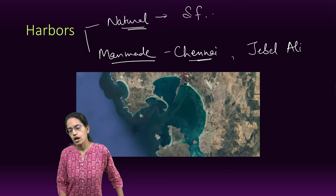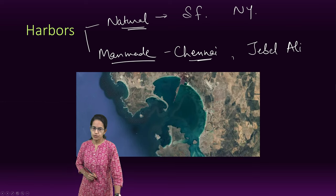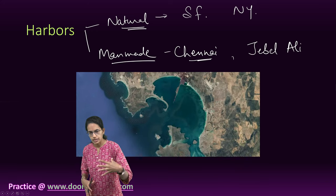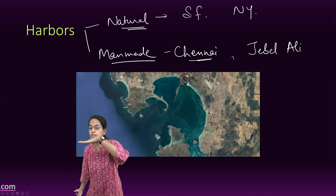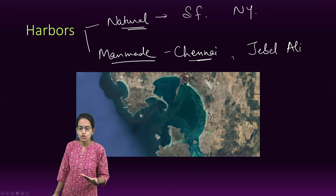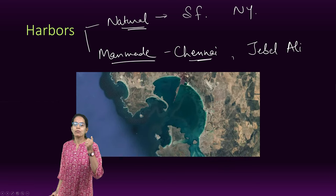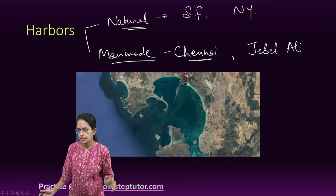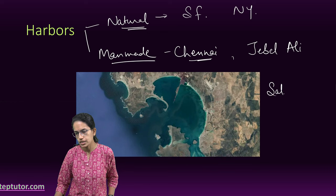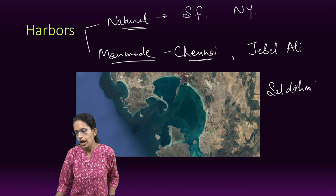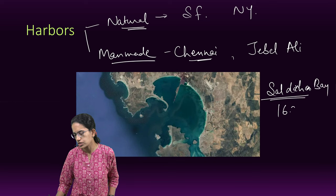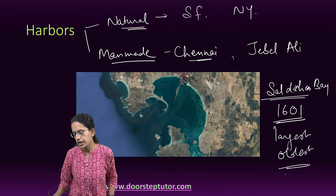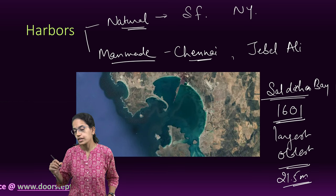Natural harbour examples include San Francisco and New York in the United States. These harbours create a protective area where ships can enter. The most important thing is that in a harbour, the depth should be sufficient so that even large ships do not touch the bottom and can float easily. Harbours have to be deep — only coastlines with deep waters can have harbours. One important harbour visible in this picture is Sadhana Bay, discovered in 1601, considered one of the largest and oldest harbours, accommodating vessels with a depth of up to 21.5 metres.